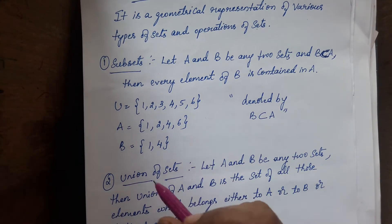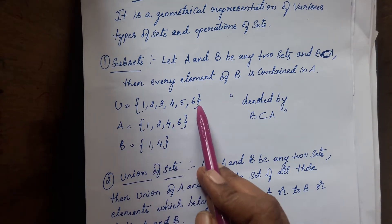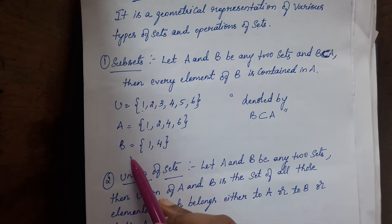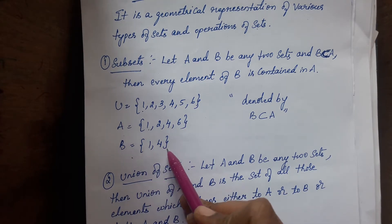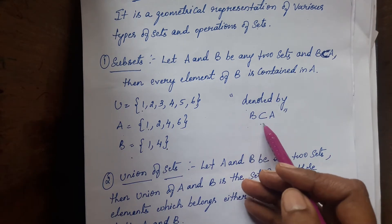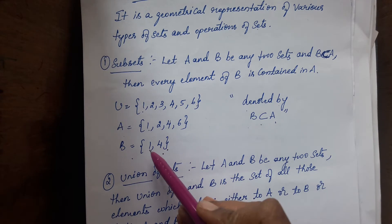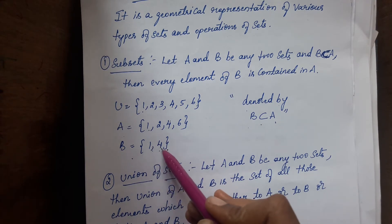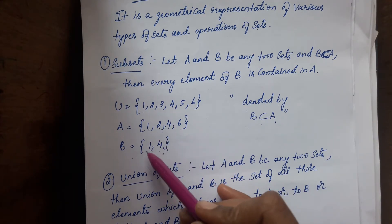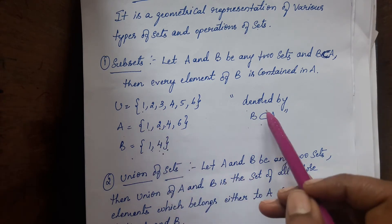For example, here U is the universal set {1, 2, 3, 4, 5, 6}. A contains elements {1, 2, 4, 6} and B contains {1, 4}. So subset means B ⊆ A — all the elements of B, that is 1 and 4, are contained in A also. Since all elements of B are contained in A, we say B is a subset of A.